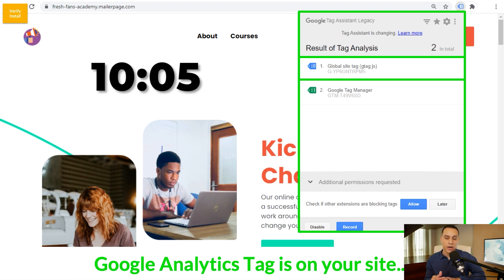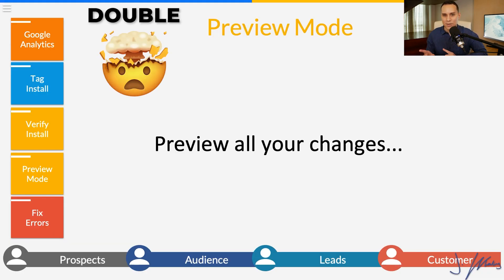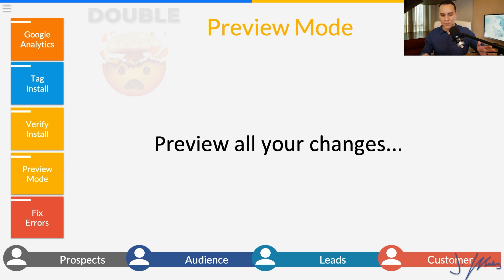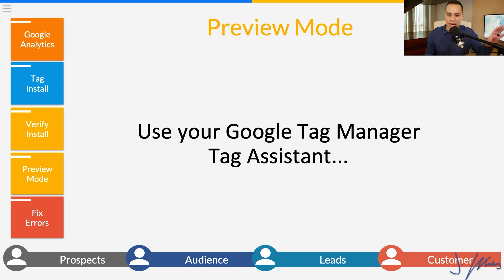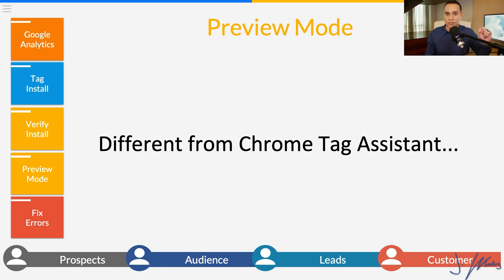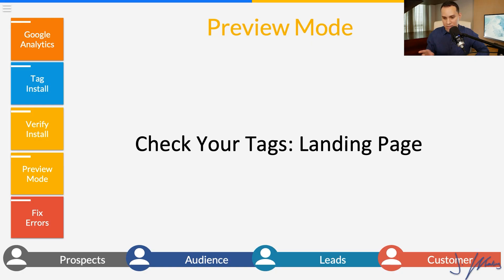If you have any problems, jump to the last section where we talk about troubleshooting. Now I want to quickly go through the new Preview Mode, also called Google Tag Assistant — Google wanted to make it really confusing, not to be confused with the tag assistant Chrome plugin we just used. This is how to preview all of your changes, which is going to be really helpful. It lets you see exactly what tags fired and track how your different tags fire as you navigate your website. Jump back into Tag Manager — it's different from the Chrome plugin. If you've used Tag Manager in the past, you've probably seen the orange preview bar; this is what's replacing that.